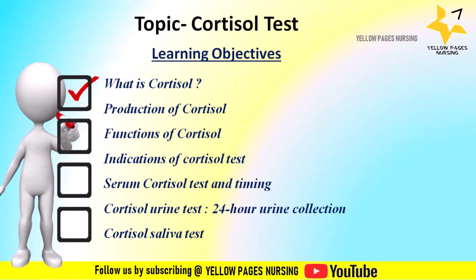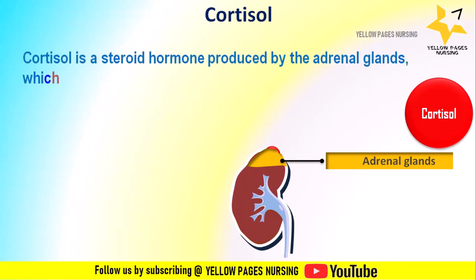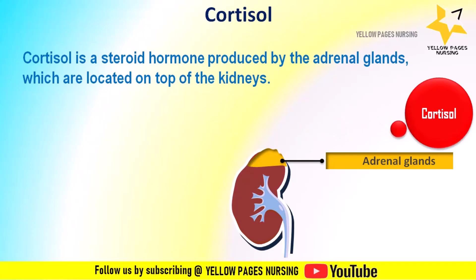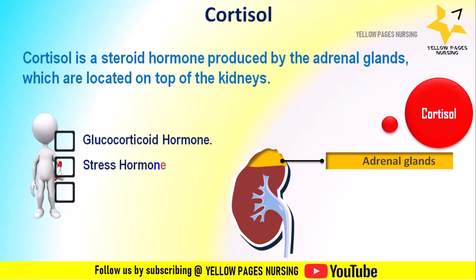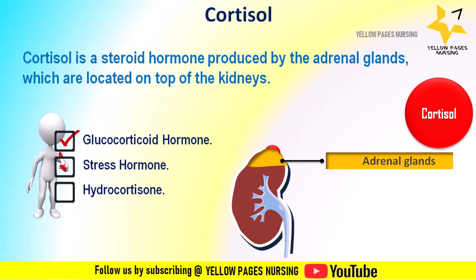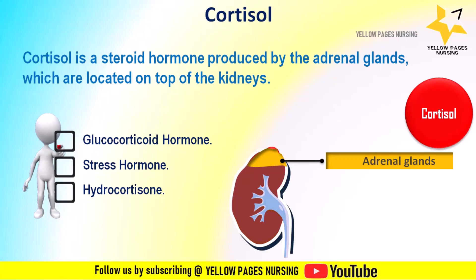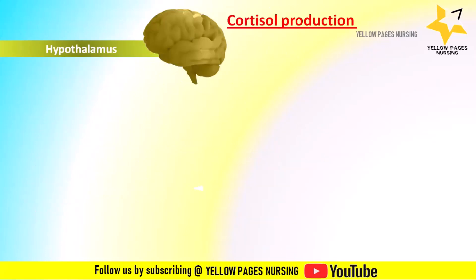Cortisol is a steroid hormone produced by the adrenal glands, which are located on top of the kidneys. Cortisol is called by different other names — that is, glucocorticoid hormone, which comes under the glucocorticoid class of hormones. Cortisol is often referred to as the stress hormone because its production increases in response to stress. When cortisol is used as a medication, it is known as hydrocortisone.